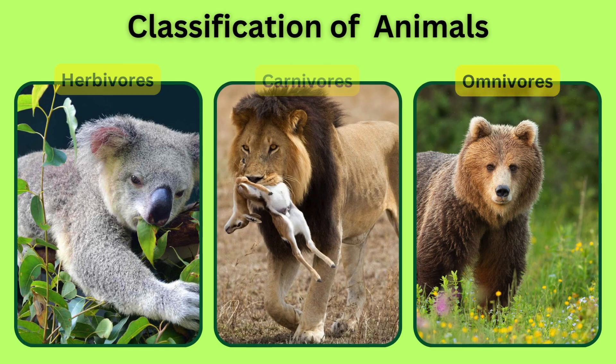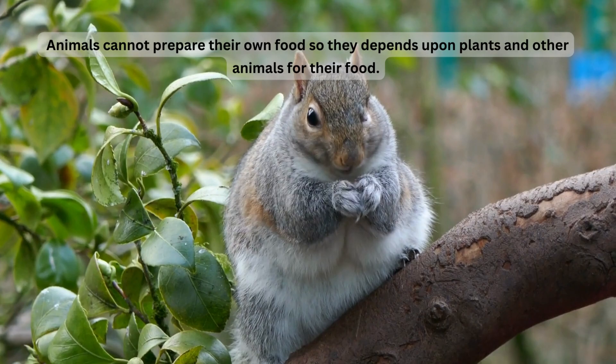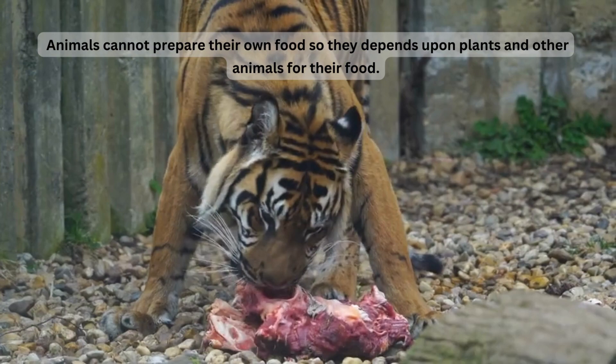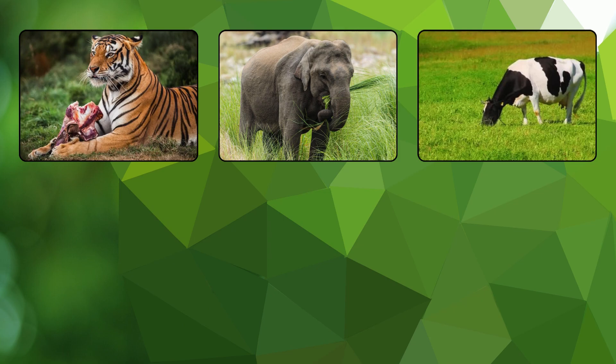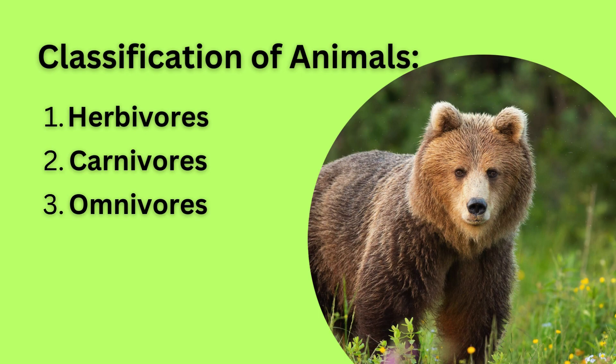Today we will learn about classification of animals according to the food they eat. As we know, all living things need food to grow and live. Animals cannot prepare their own food, so they depend upon plants and other animals for their food. Animals are classified into three groups on the basis of food they eat: herbivores, carnivores, and omnivores.